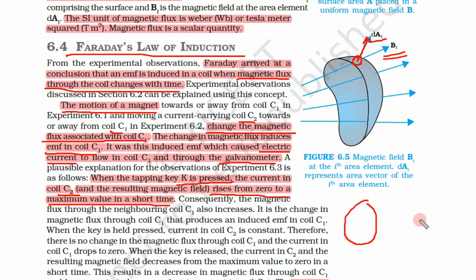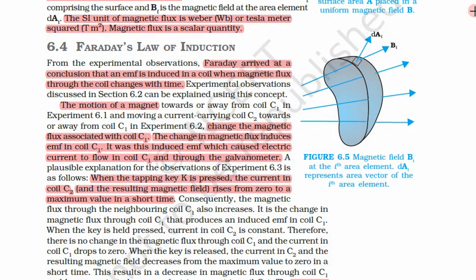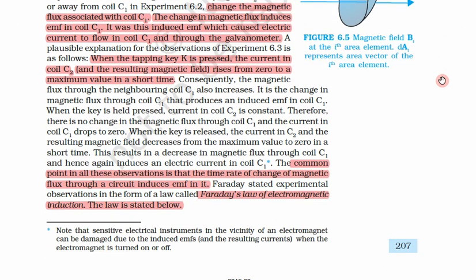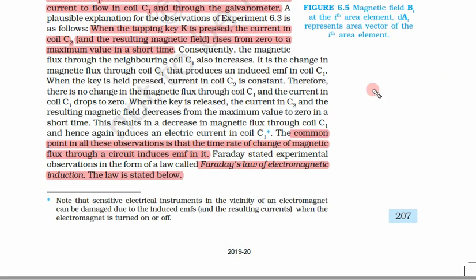As we tap the key, since there was no magnetic field previously, now there is one, so the magnetic field rises from zero to a maximum value. This gives a magnetic flux change in coil C1, and we get a deflection in the galvanometer. But if the current is continuously flowing, there is no change because the magnetic flux remains constant. As soon as we remove the key, the magnetic field stops, so there is again a flux change.